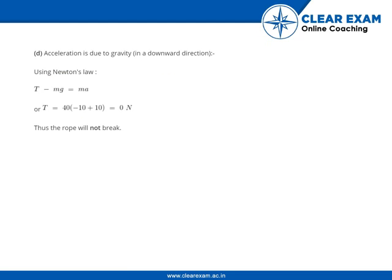In case D, the monkey falls down under the acceleration due to gravity in the downward direction. Therefore, using Newton's law, T minus mg equals mass into acceleration. Putting in the values, we get the tension as 0 on the string, therefore the rope will not break.